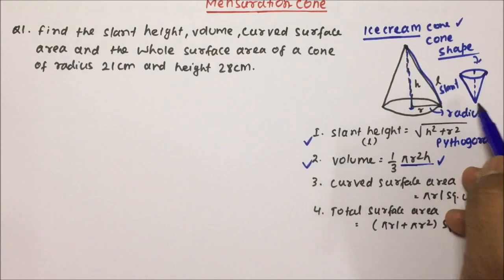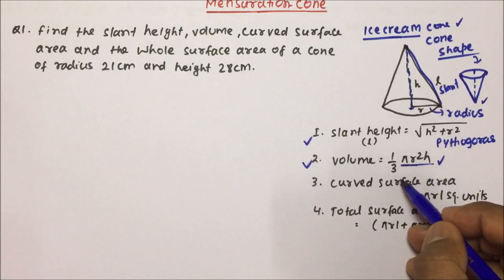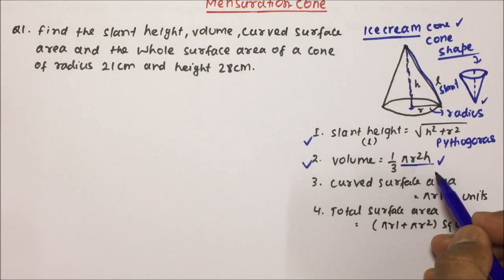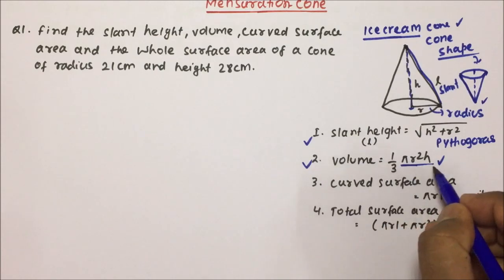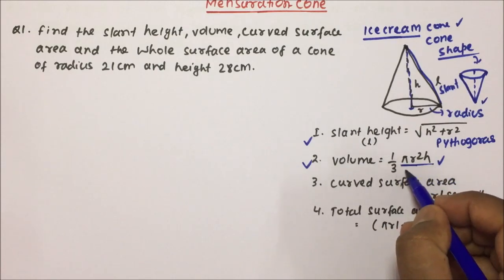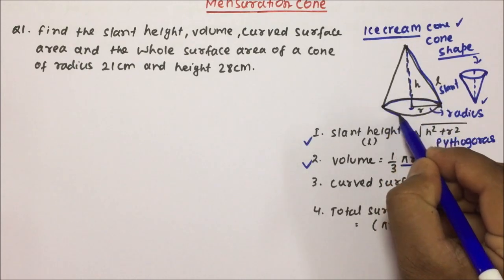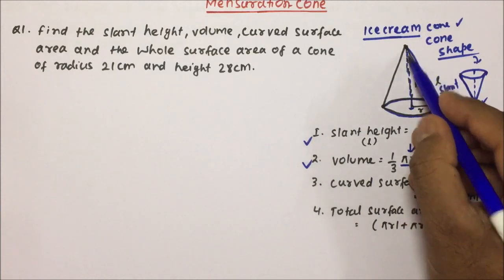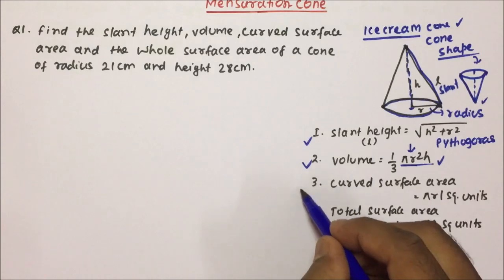Think of a gas cylinder and an ice cream cone — definitely the cone volume will be less. Ice cream volume will be lesser than the cylinder. So the volume of a cone is one-third of the volume of the cylinder: 1/3 × πr²h. Here πr² is the area of the circular base, and h is the height, so volume equals area of base into height divided by three.